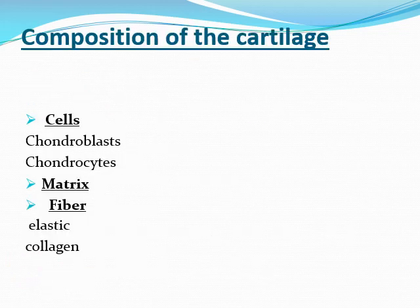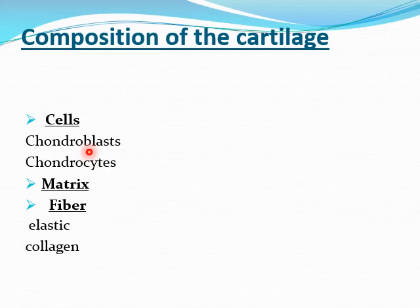Cartilage is formed of cells, fibers, and matrix. The cells we have are chondroblasts and chondrocytes. 'Chondro' stands for cartilage. The chondroblast is a young, active, protein-producing cell, while the chondrocyte is a mature cell that maintains the matrix and fibers. The fibers are either elastic fibers or collagen fibers.